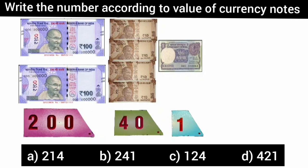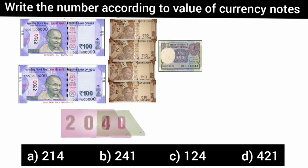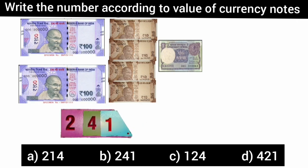So children, from these notes, the number comes out to be two hundred forty-one. So option B is the correct answer of this question.